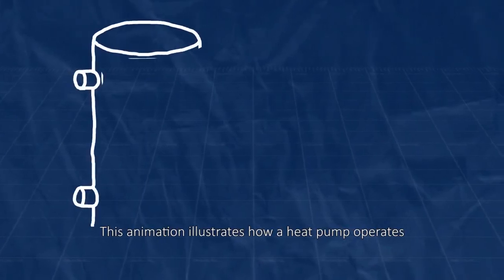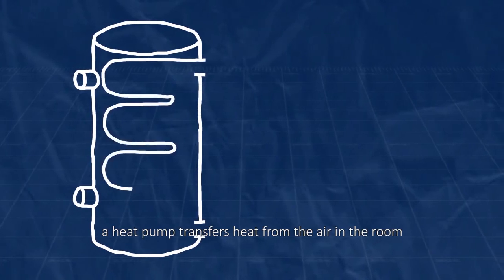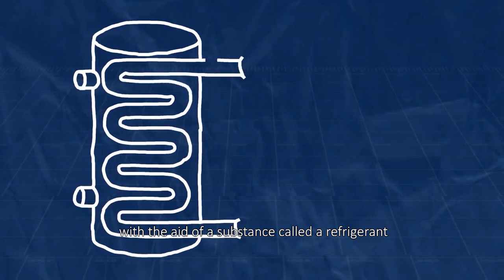This animation illustrates how a heat pump operates. Generally speaking, a heat pump transfers heat from the air in the room to the water in the tank with the aid of a substance called a refrigerant.